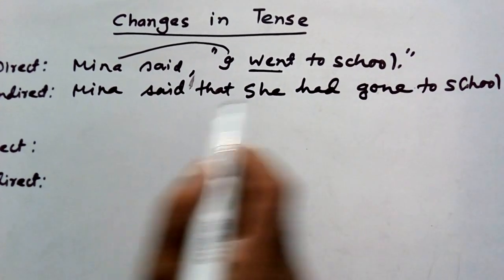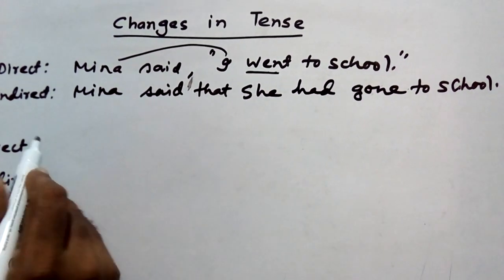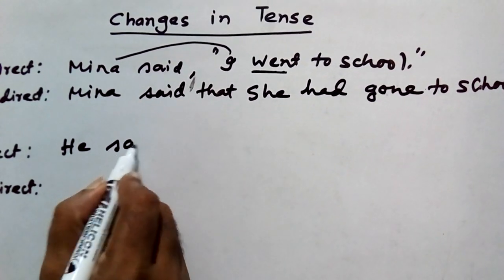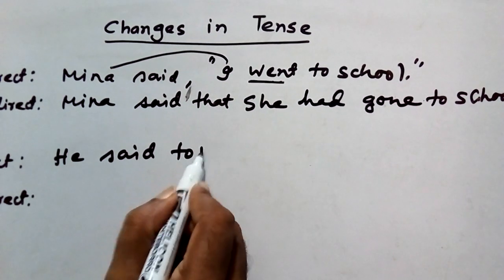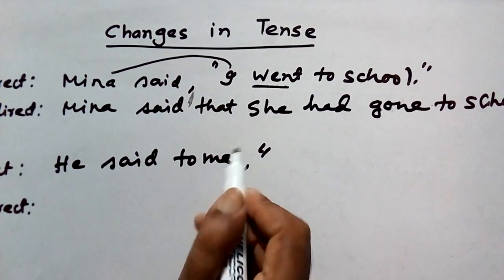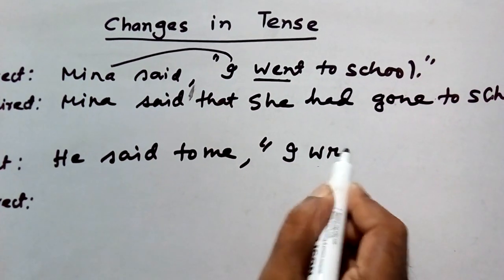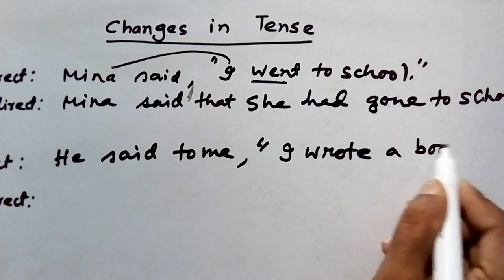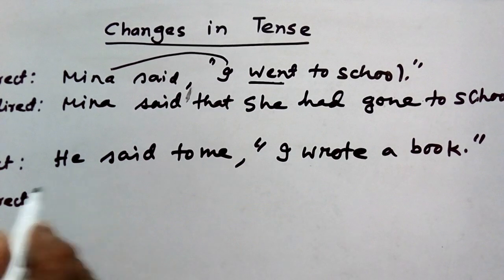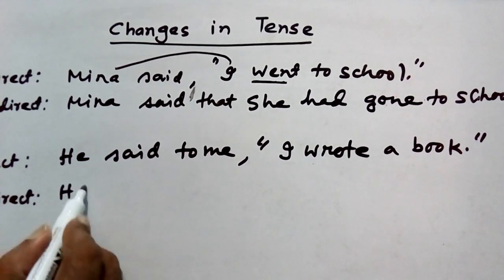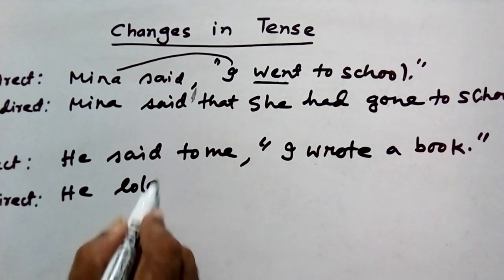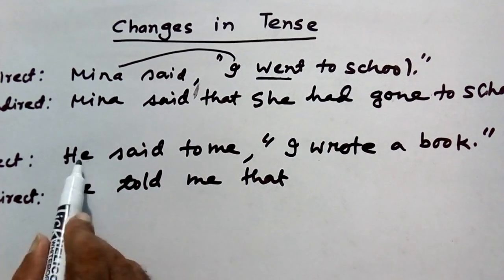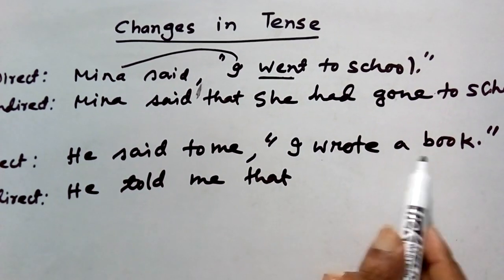In another example, if we write: 'He said to me, comma, inverted comma, I wrote a book.' So in the indirect speech, we can write: 'He told me' — that is the reporting clause — and 'that' connects to the reported clause.